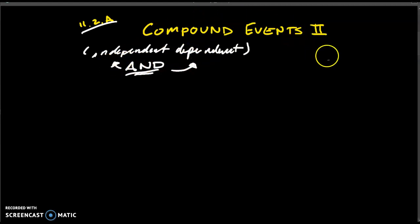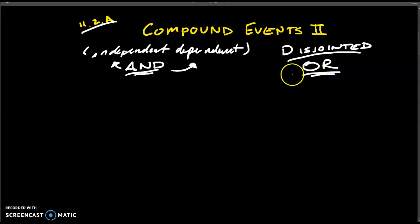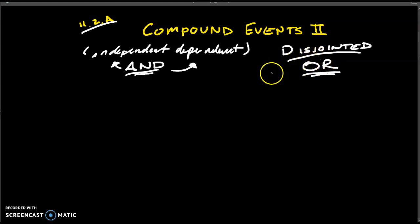Now, what we're going to look at today is something called disjointed events. These are kind of interesting because they will actually have an entirely new way of being referenced. If you hear of something being disjointed, you will see this word right here — you'll hear the word 'or.' I'll say something like: what is the probability of you pulling a jack or a diamond? And when you have the word 'or' there, it just means that there are a couple of different probabilities.